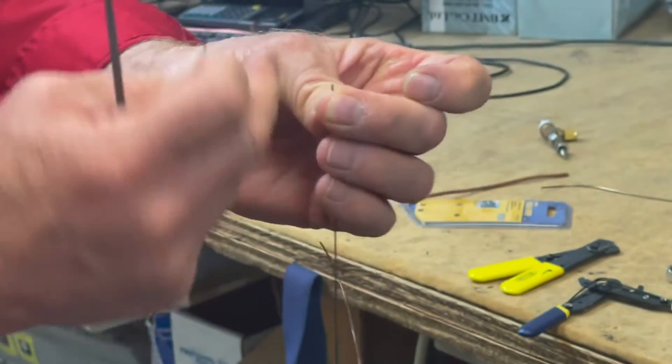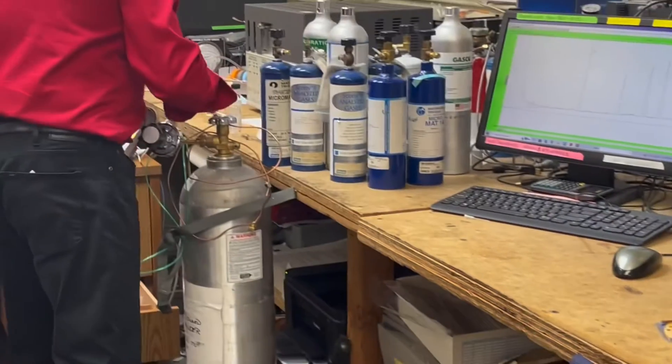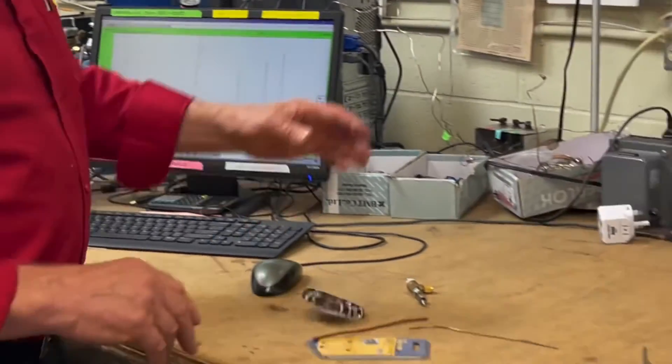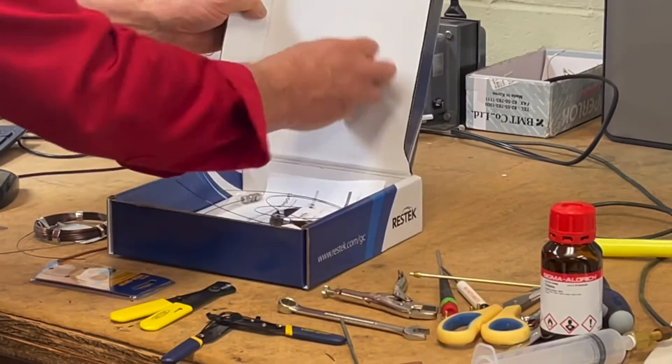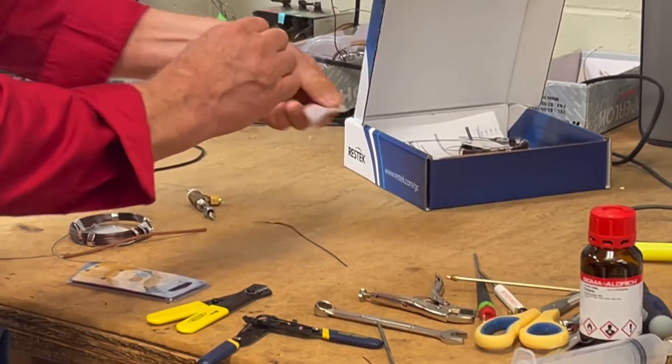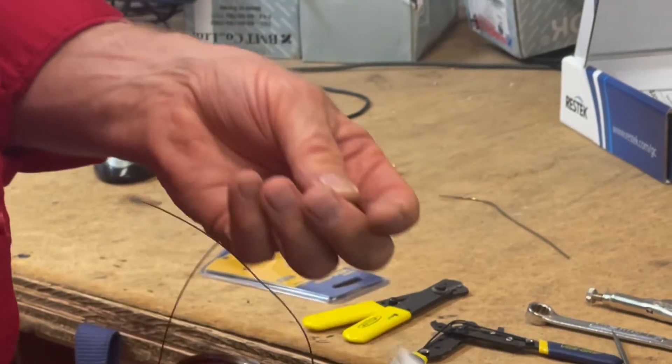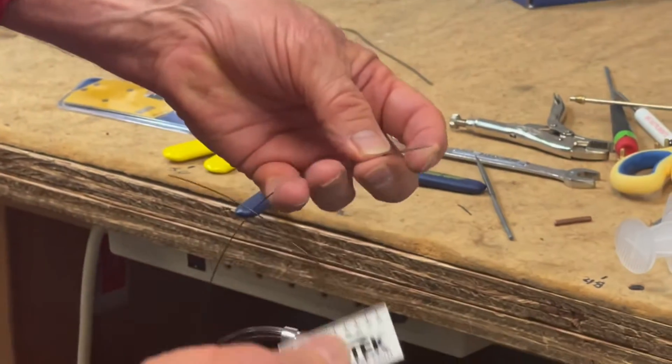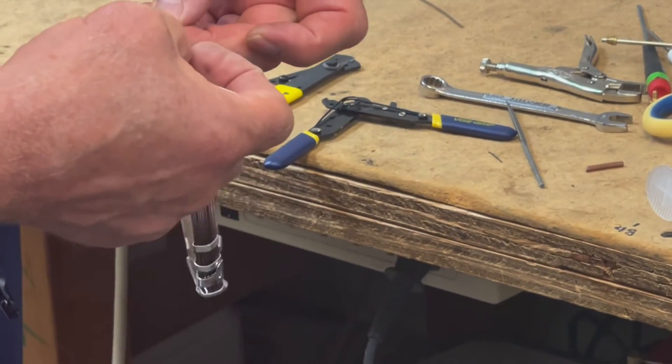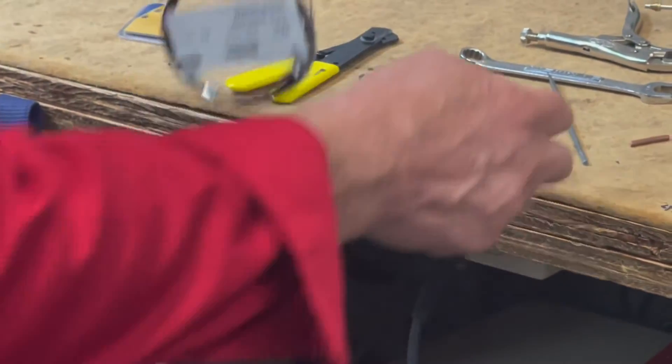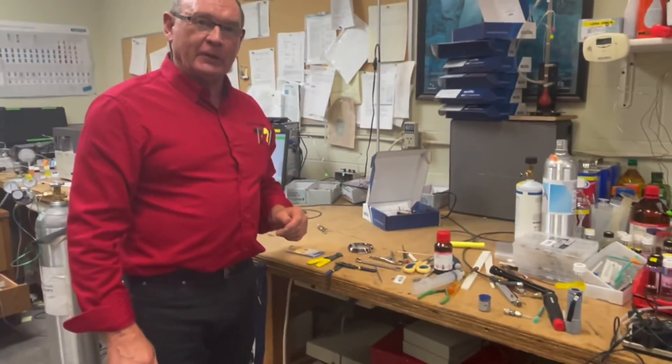Sometimes people use something called a scoring wafer. They oftentimes come free with the column if you buy it like from Restek, they'll give you a free scoring wafer with the column. The scoring wafer is just a very hard ceramic so you do the same thing, you position the column between your two fingers, you make a quick cut and then you snap it off right where the underside of the cut was. That's the story on cutting tubing for gas chromatographs.